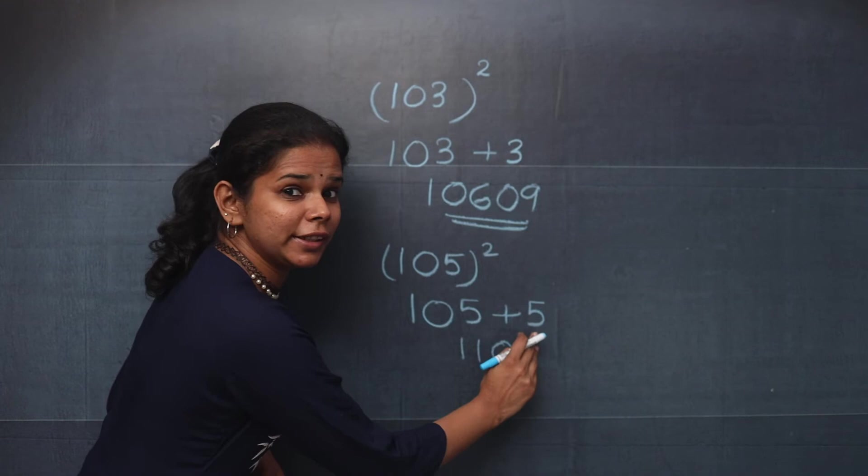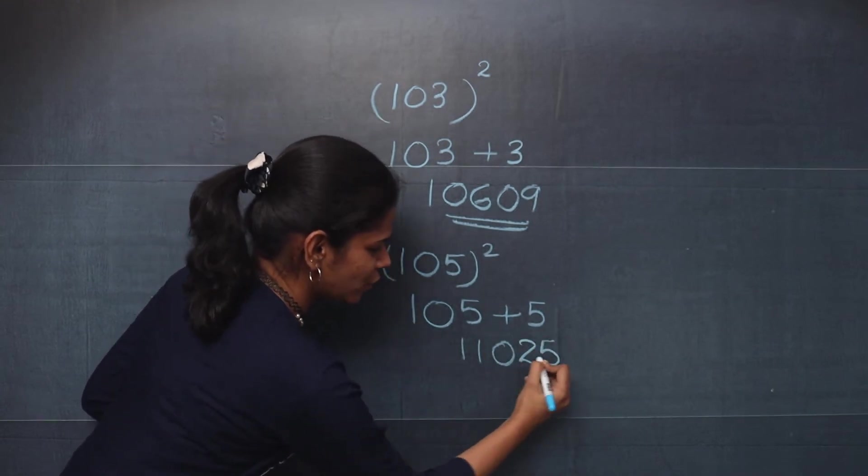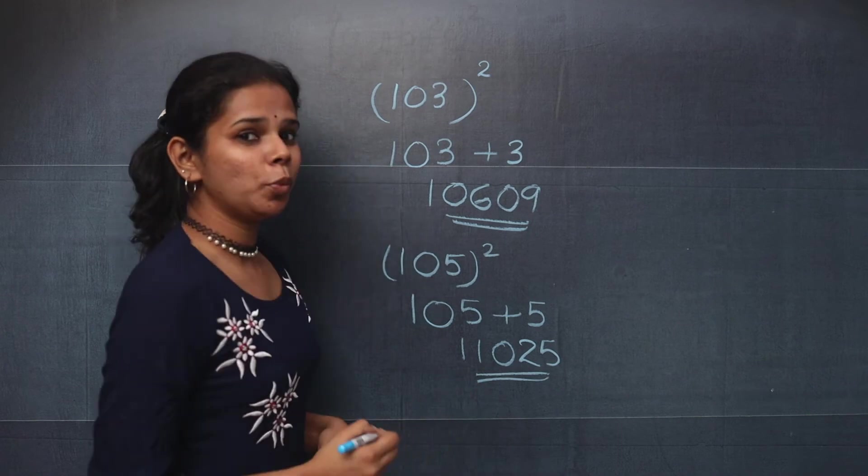Now you will take the square of 5. That is 25. So your answer is 11025.